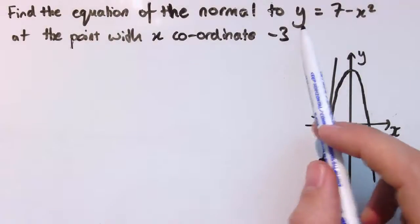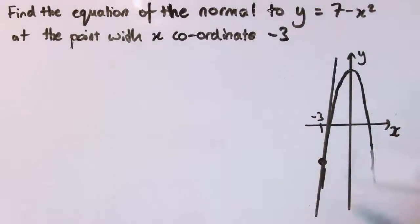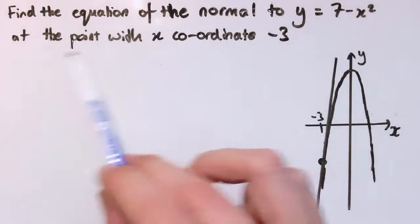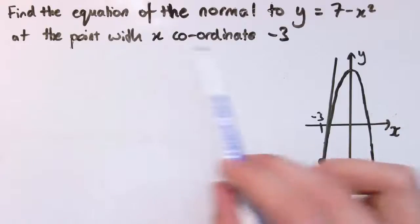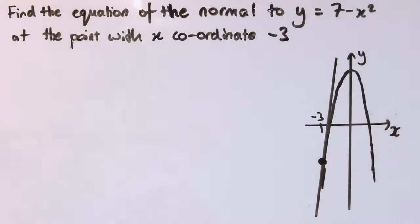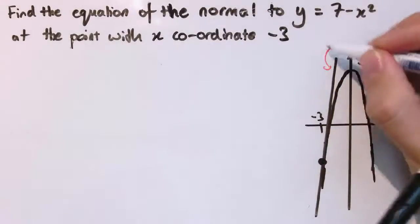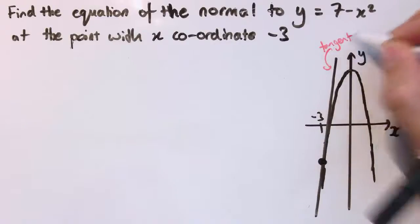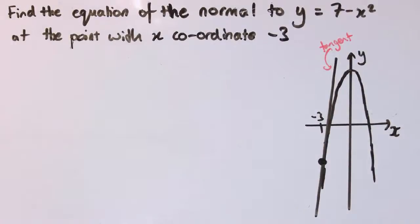So here's the curve we're looking at, y equals 7 minus x squared, and I've drawn a sketch of the curve here roughly, and I want to find the normal at the point with the x-coordinate minus 3. So here's minus 3, here I've just marked the point where those curves intersect, and this line here is the tangent to the curve at that point.